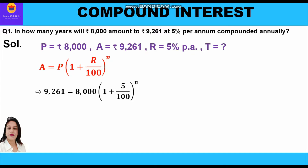So 9261 = 8000 × (1 + 5/100)^n. r% is 5%, so we have written 5 upon 100, whole raised to power n. Now we shall cross multiply and write 9261 upon 8000 = (105/100)^n. Taking the LCM, we get (105/100)^n.